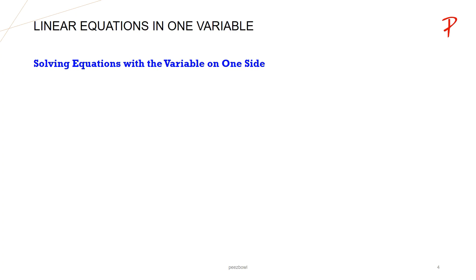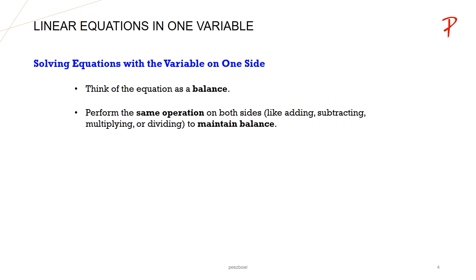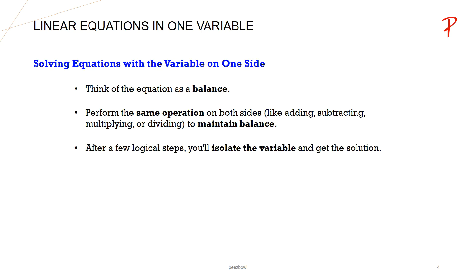Now let us learn how to solve equations with the variable on one side, focusing on equations with linear expressions in one variable. Think of the equation as a balance. Perform the same operation on both sides — addition, subtraction, multiplication, or division — to maintain balance. After a few logical steps, you will isolate the variable and get the solution.